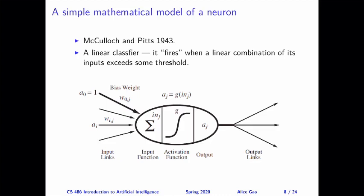Artificial neural networks actually use a very simple mathematical and computational model of a neuron. This model was first proposed by McCulloch and Pitts in 1943. This tells you that this is not a new idea — it's been around for a few decades already.